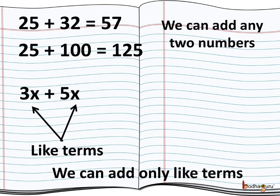We can perform addition or subtraction with two numbers. Like here 25 plus 32, we can add them directly. If we replace 32 by 100, we can still perform the addition and we get the answer as 125. But in algebraic expression, addition or subtraction is possible amongst like terms only.